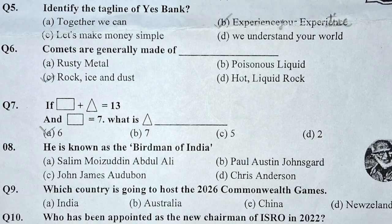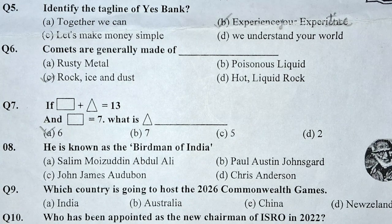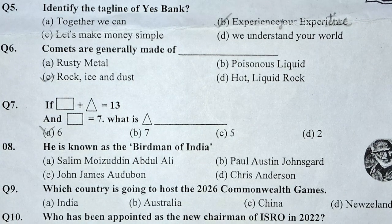Question number 7: If a rectangle plus a triangle is equal to 13 and a rectangle is equal to 7, then what is the value of a triangle?